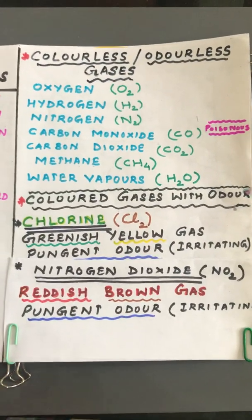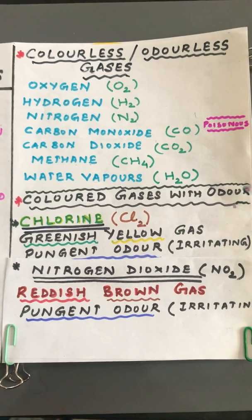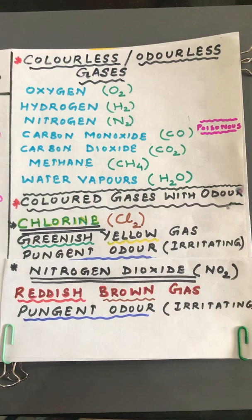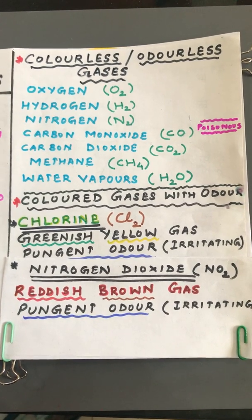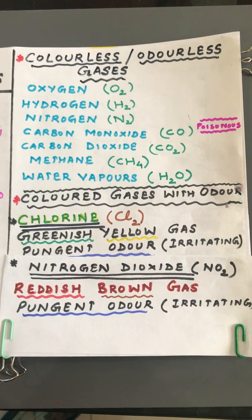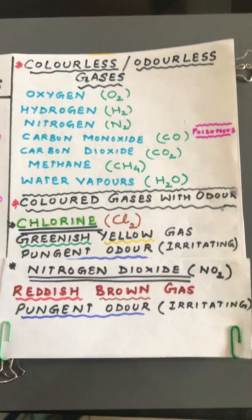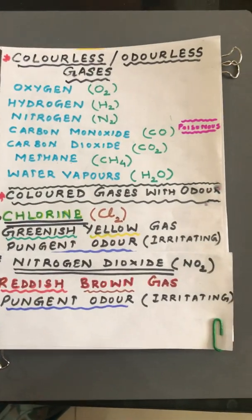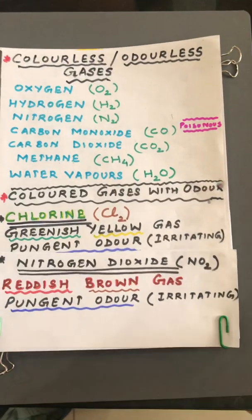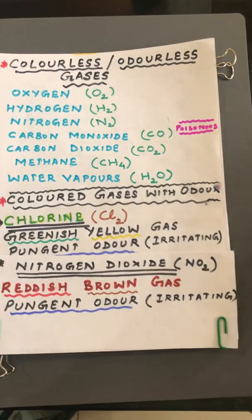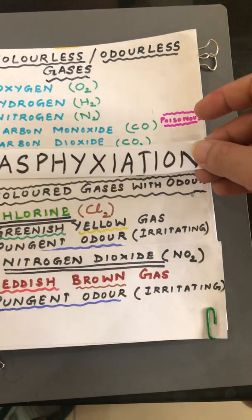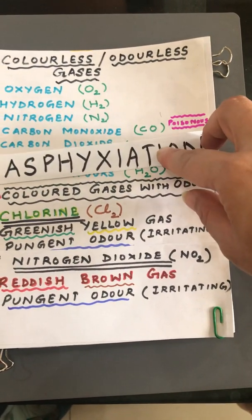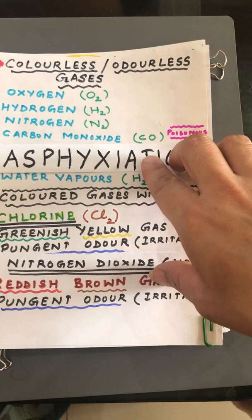'Dil' for dilute — having more concentration of water. Now let us discuss colorless and odorless gases: oxygen O2, hydrogen H2, nitrogen N2, carbon monoxide CO, carbon dioxide CO2, methane CH4, and water vapors H2O. All these gases are colorless as well as odorless, but out of these, carbon monoxide is one gas which is highly poisonous and causes a situation known as asphyxiation.